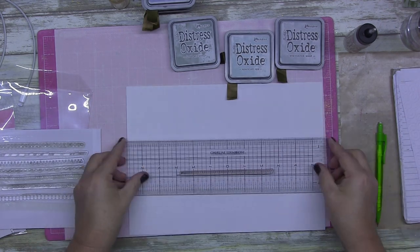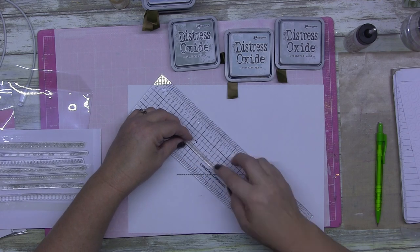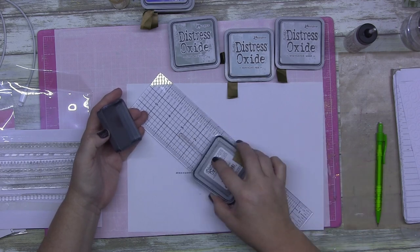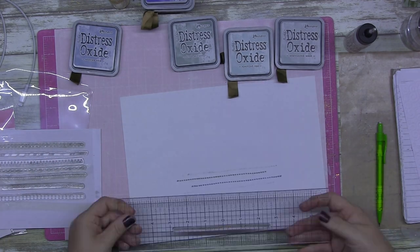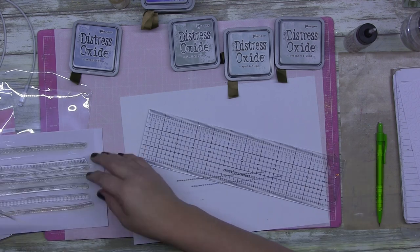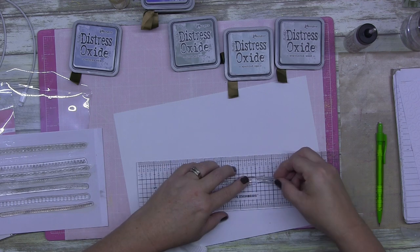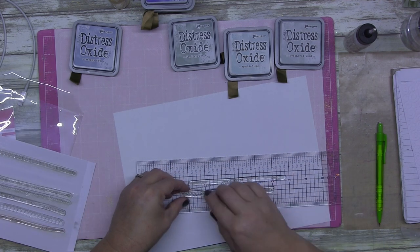What I realized was I don't necessarily need to buy a bigger stamping block because I do have a mister, a We R Memory Keepers one. So if I want to get anything accurate like that I can use that with my biggest stamps.